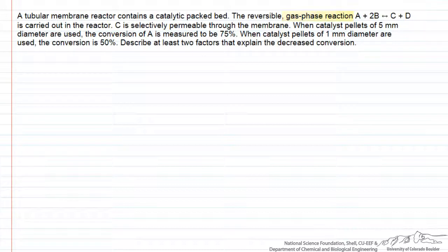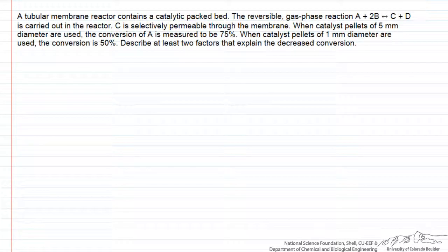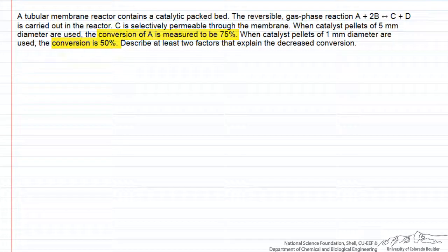Here we have a gas phase reaction in a membrane type flow reactor where one of the products can diffuse out of the membrane. There are several effects that we can observe when we decrease the catalyst pellet size inside that membrane reactor. Our overall observation is that the conversion drops from 75 to 50%, and we want to describe at least two factors that could explain the decreased conversion.